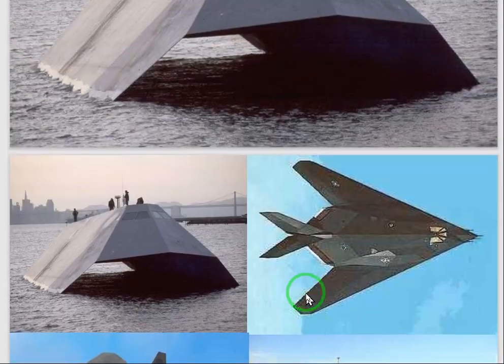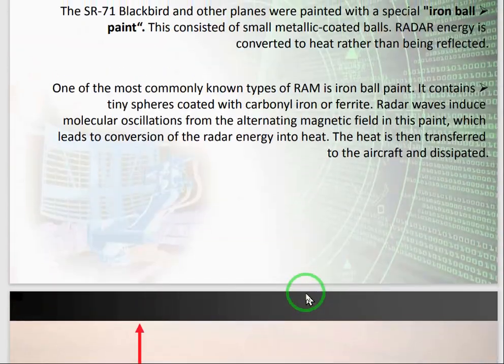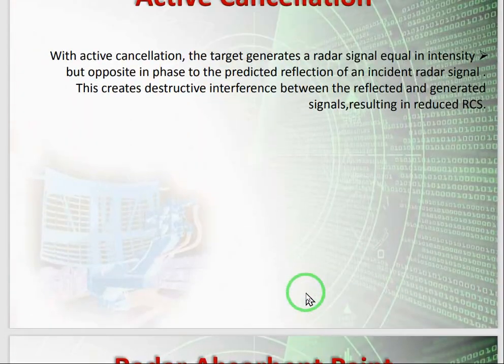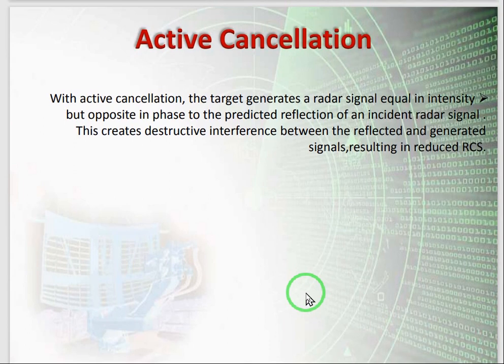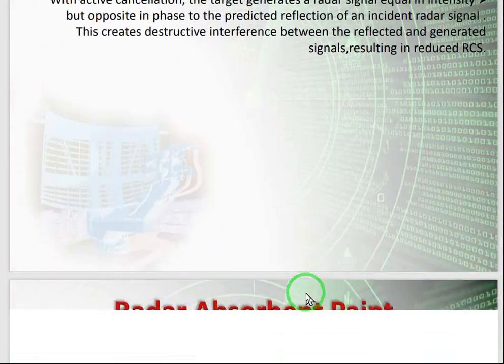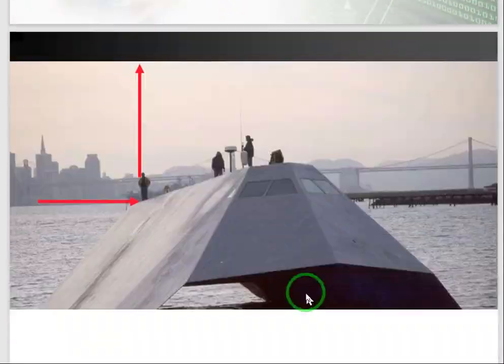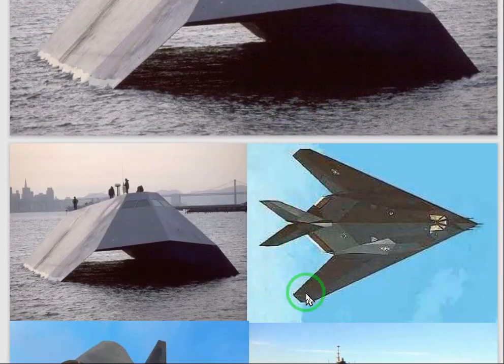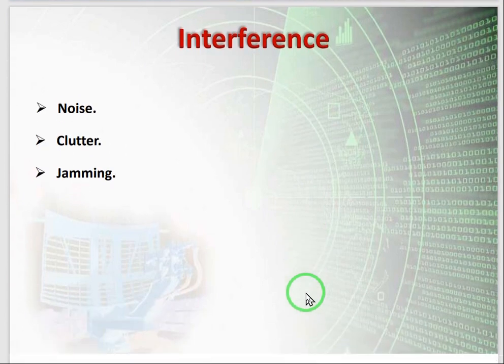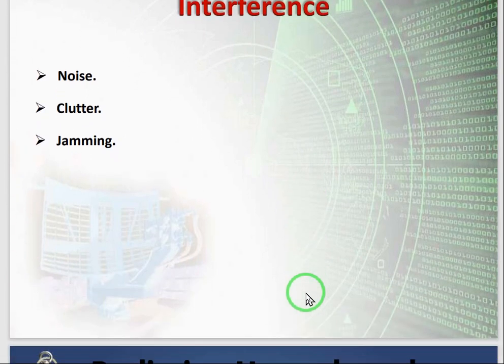As an example seen previously, in active cancellation we have used this jamming. How we use jamming: we created the same signal with the radar frequency but with opposite phase, which creates destructive interference. That is how jamming is used. So these are the types of interferences.